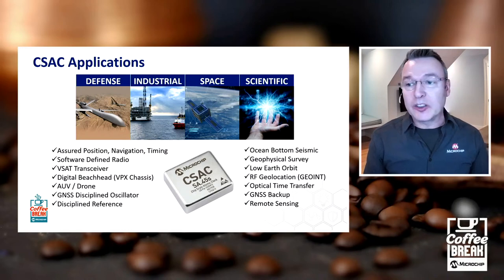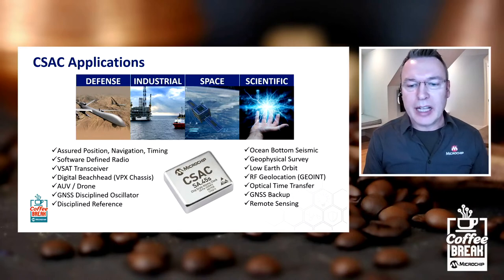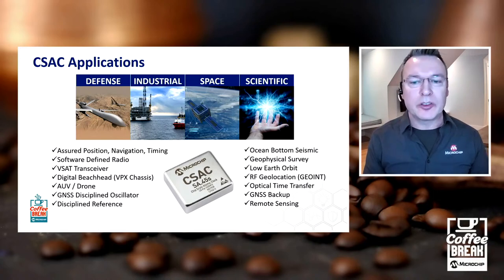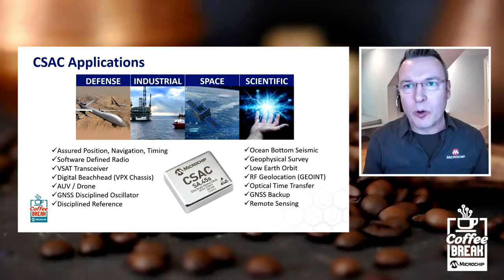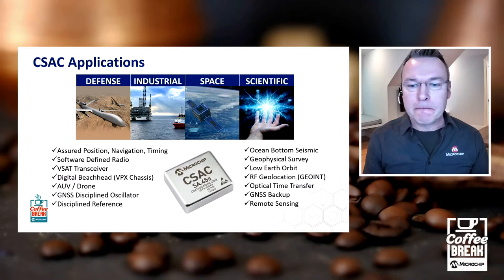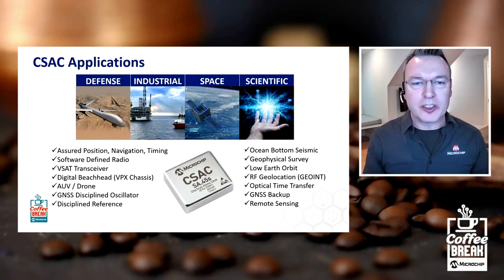Recently in space, CSAC has been used by NASA for optical time transfer between CubeSats instead of having to rely on a ground station — laying the path for navigation beyond the moon to Mars and other planets. And remote sensing: satellites staring at human activity, taking pictures, reading RF signals — all that data needs to be timestamped to create a complete picture of climate change and other human activity.